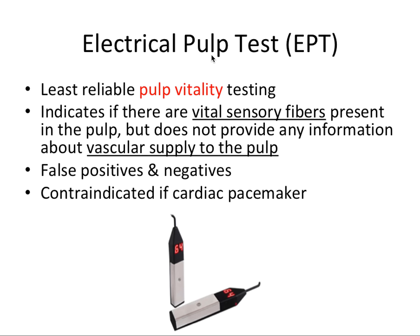The second most commonly used diagnostic tool is the electrical pulp test, or EPT. Just because it's convenient doesn't mean it's the most reliable — in fact, it's the least reliable pulp vitality testing method we have. It indicates if there are vital sensory fibers or nervous tissue present in the pulp, but does not provide any information about vascular supply to the pulp. Vascular supply is actually the true determinant of pulp vitality. The EPT just tells you theoretically if the tooth is alive or dead — nothing in between.